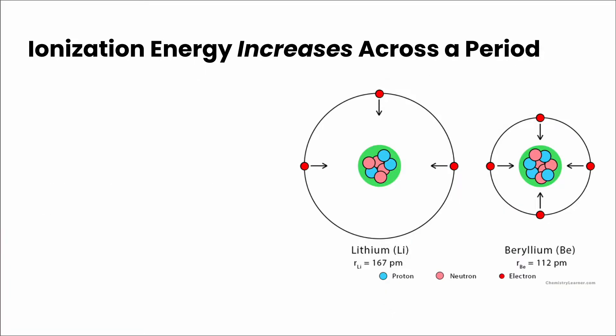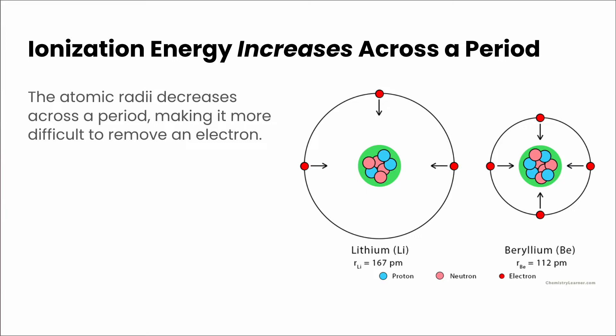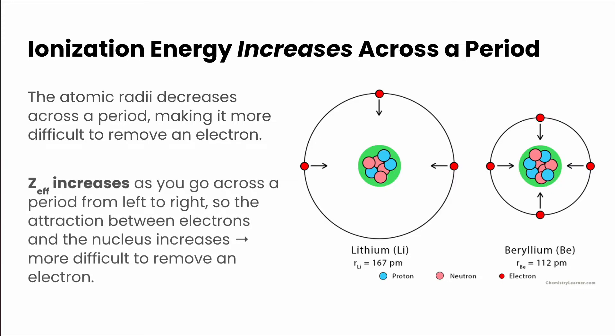If we take a look across a period, atomic radii decreases across a period because the effective nuclear charge increases across the period. When atomic radii decreases, it makes it more difficult to remove an electron. That's because the effective nuclear charge increases, so the attraction between the electrons and the nucleus also increases, thus making it way more difficult to remove an electron.